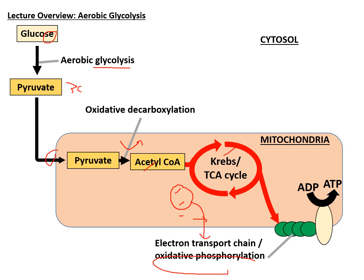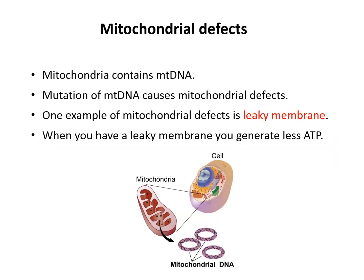Mitochondria contain their own DNA, known as mitochondrial DNA. Mitochondrial defects can arise due to mutations in this DNA. One example is the leaky membrane: when you have a leaky membrane, you get less ATP production. This partially explains why certain people can eat a lot but gain weight slowly — they may suffer from a leaky membrane — while others gain weight easily because their metabolism is very efficient.